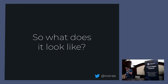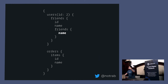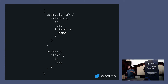What does GraphQL actually look like? Before we look at GraphQL, let's look at what we have currently — something like slash V2 users, wanting to get orders, include all items, then the third post's author's friends. You kind of have to make multiple round trips to the server. With GraphQL, you can see we get the second user, we get their friends, their ID, their name, and their friends' name — all in one query. Just send it and let the GraphQL layer take care of the logic.